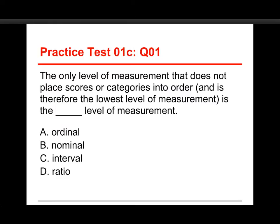The first question is: the only level of measurement that does not place scores or categories into order, and is therefore the lowest level of measurement, is the blank level of measurement. The choices are Ordinal, Nominal, Interval, and Ratio. The answer is Nominal. Nominal means name, and it simply indicates different categories — this person goes into Category 1, this person goes into Category 2 — indicating difference without indicating more or less. Nominal variables are the lowest level of measurement. A step up is Ordinal, because that adds order. Then Interval, because it adds specified distances between things. And the top is Ratio, because that adds a true zero point. The only one that doesn't place things into order is Nominal.